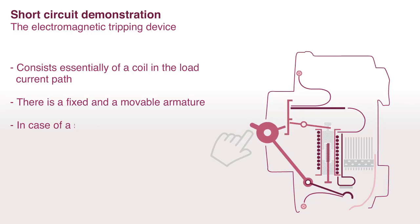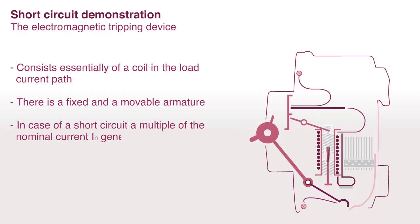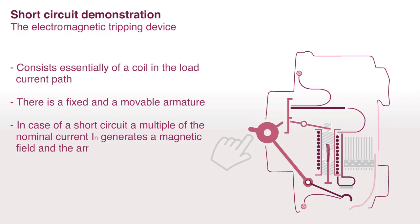In the case of a short circuit, a multiple of the nominal current, high N, generates a magnetic field and the armature will be attracted against the spring.